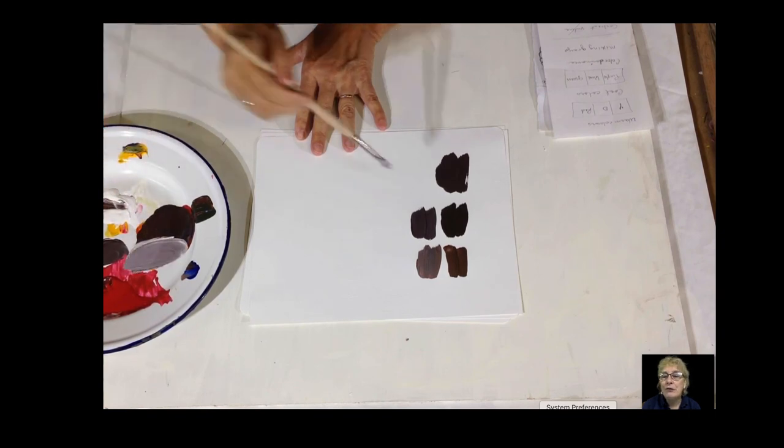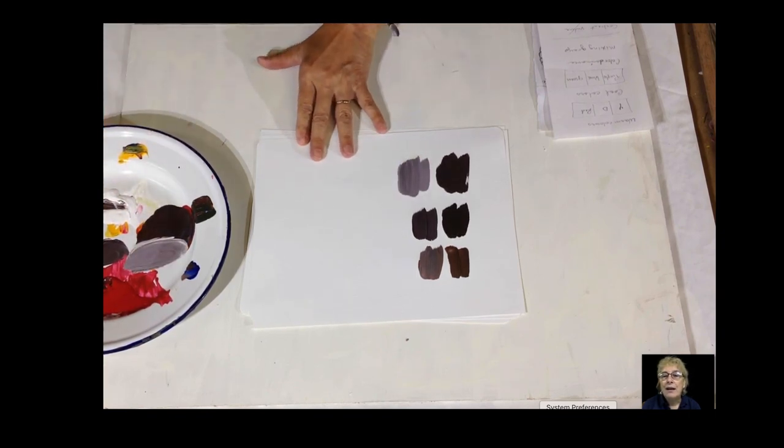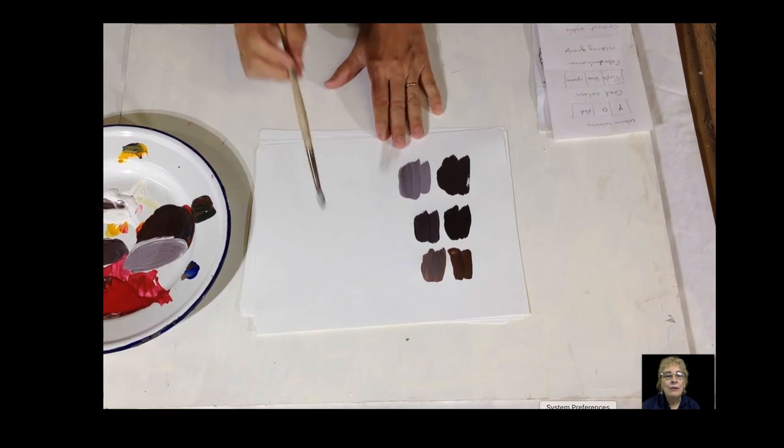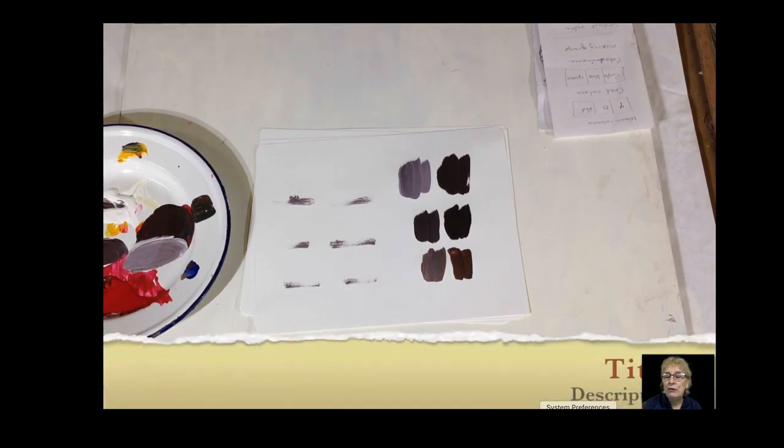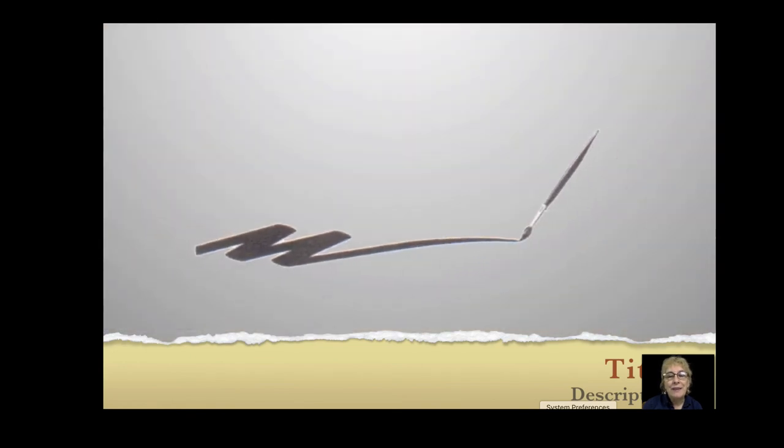Now the more pigment you have, like that one, you get a darker dark, and the more white you add, the grayer it gets. Now you could keep adding white and getting more variations. I won't do that for you, but you can try that out. So here are some basic tips. Try these out. They're really fun.